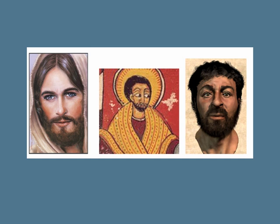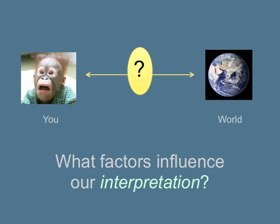How we see the world — how we image the world to ourselves through art, through the media, through magazines, through television — is a way of doing things that is highly manipulated, culturally biased, and shaped. Between ourselves and the world, we have this whole array of things that influence the way in which we interpret things.